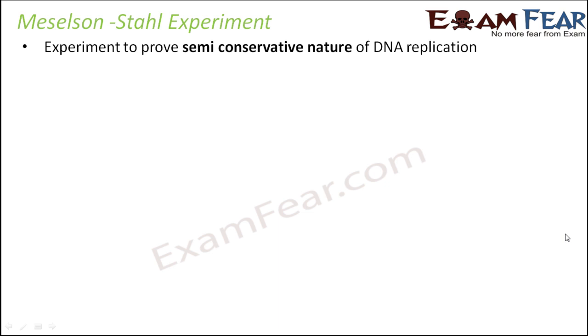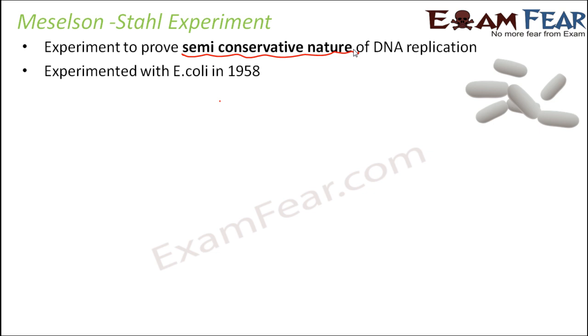So then came experimental evidence to prove how exactly DNA replicates. This experiment was performed by Meselson and Stahl and is known as the Meselson-Stahl experiment. It was performed with the bacteria E. coli, that is Escherichia coli, in the year 1958. This experiment was designed to prove the semi-conservative nature of DNA replication.